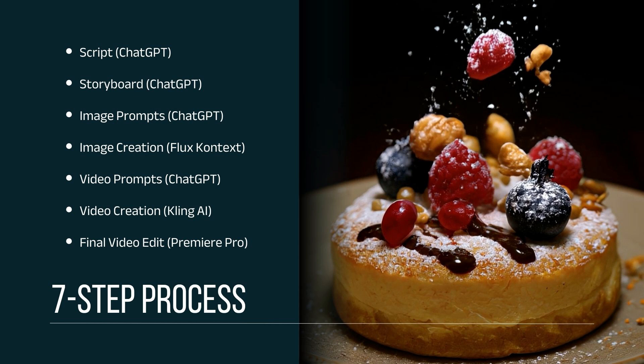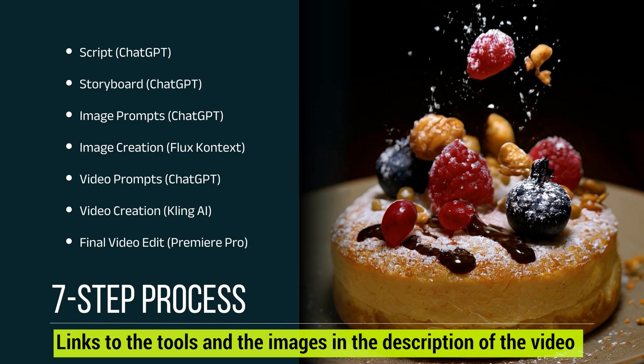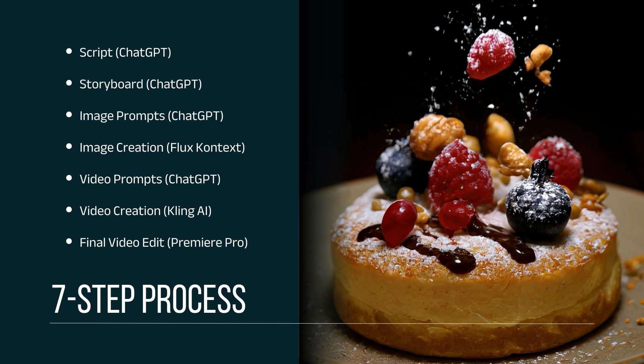Let's see the process involved in this. As I've shown in a couple of my videos when turning images into a video, I like to use this seven step process: it starts with a script and creating a visual storyboard from that script — both done inside ChatGPT. Once happy with the storyboard, we generate prompts for the different frames, then use Flux Context for images, get video prompts, turn them into videos, and finally put them together in an editing software.